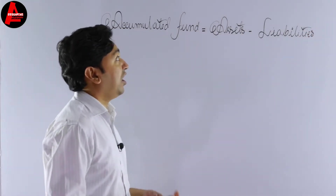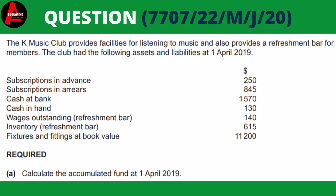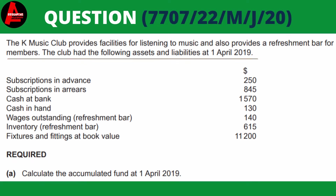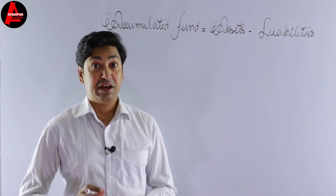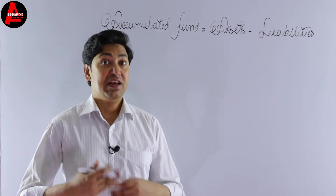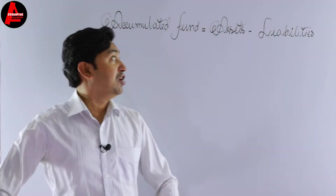Now here we have an example. The K Music Club provides facilities for listening to music and also provides a refreshment bar for members. The club had the following assets and liabilities at first April 2019. We have subscription in advance, subscription in arrears, cash at bank, cash in hand, wages outstanding, inventory, and fixtures and fittings at book value.